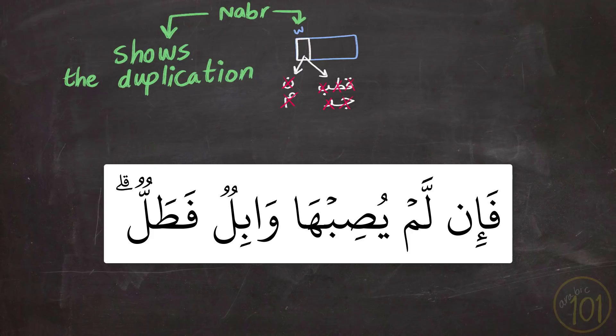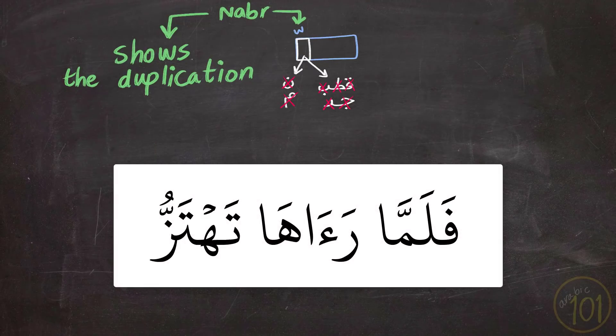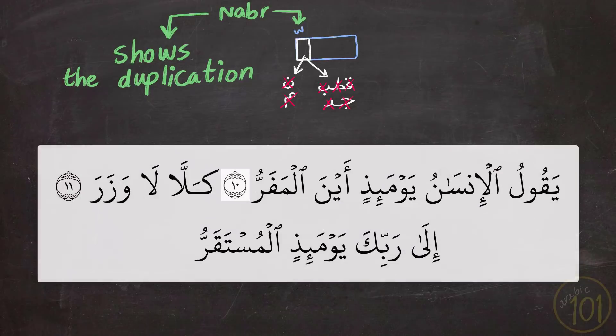Let's hear the following examples when we recite properly with نَبْر and then what it would sound like if we skip the نَبْر. So we say فَإِن لَمْ يُصِبَهَا وَابِلٌ فَطَلْ. If I don't apply the stress it's going to sound like this: فَإِن لَمْ يُصِبَهَا وَابِلٌ فَطَلْ. No, it is not فَطَلْ. It is فَطَلْ. The second part of the word is stressed, has نَبْر. One more example: فَلَمَّ رَآهَا تَهْتَزْ. So we say تَهْتَزْ, not فَلَمَّا رَآهَا تَهْتَزْ. That is not correct. The stress is on the last part of the word.